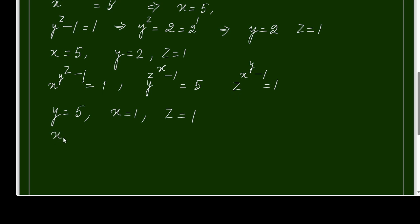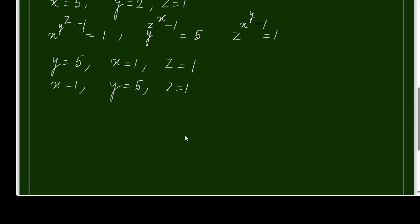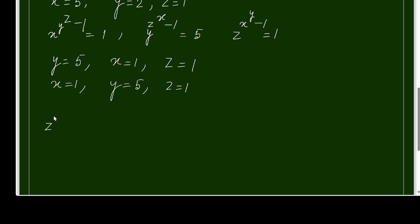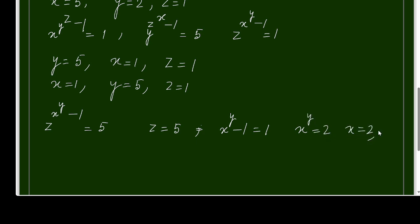For the third option: z^(x^y − 1) = 5, which gives z = 5 and x^y − 1 = 1, so x^y = 2, meaning x = 2 and y = 1. The last solution triplet is x = 2, y = 1, z = 5.